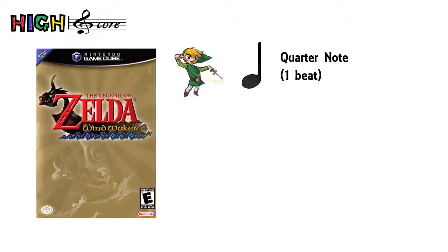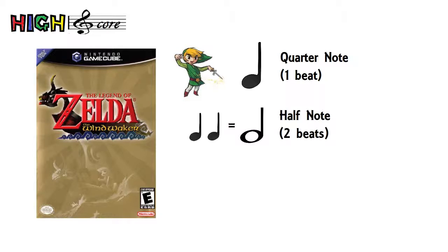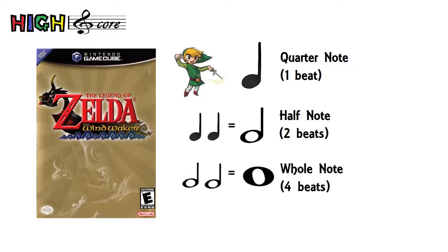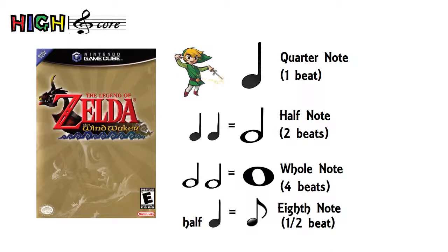The most common note you will encounter is a quarter note — think of it as one beat. Other common notes are the half note, which is worth two quarter notes or two beats; the whole note, which is worth four quarter notes, two half notes, or four beats; and the eighth note, which is worth one half of a quarter note, or a half beat. This isn't even getting into rests or dotted notes, but we'll get into that.